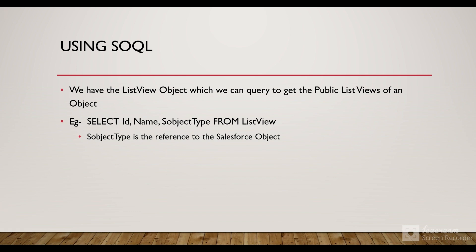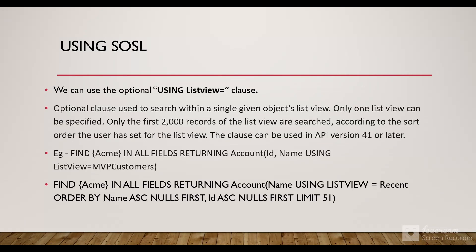We can use SOSL to query all the public list views of an object. We have the ListView object which we can query, using the SObjectType field — which is a reference to the Salesforce object API name — to get all the public list views of an object. Note that public list views don't include list views that are private to the user.